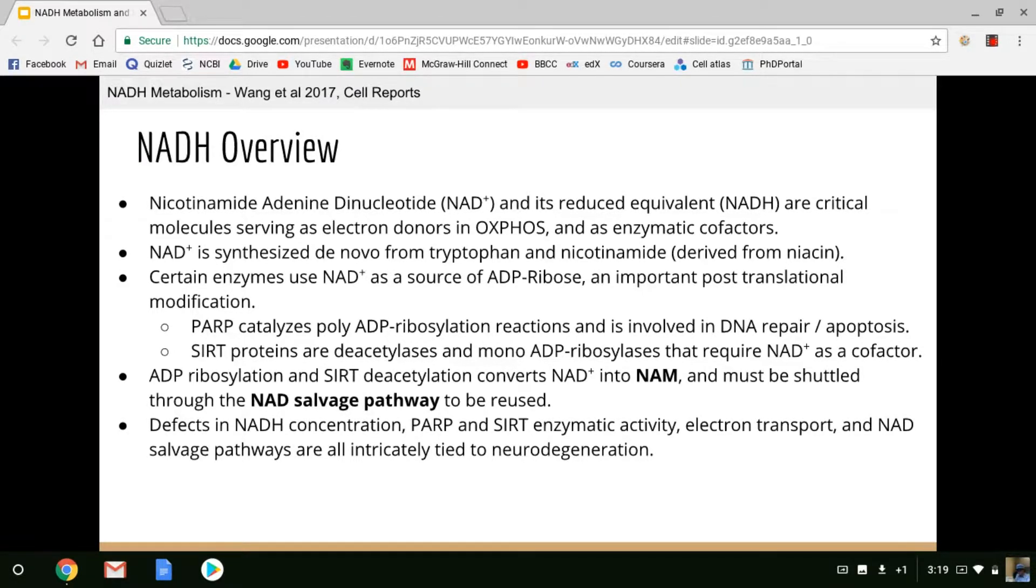Defects in NADH concentration, PARP and SIRT enzymatic activity, electron transport, and NAD salvage pathway are all intricately tied to neurodegeneration. This isn't to say that any of these specifically are the root cause of neurodegeneration, but they are frequently implicated. They may simply be a common downstream consequence of cellular dysfunction. Niacin deficiency, and thus NAD deficiency, causes dementia and neurodegeneration. So we know that a lack of NAD causes brain cells to die. But as to whether it's a driving force or a potential therapeutic target in any particular disease, it isn't known. Let's examine some of these pathways more in depth.